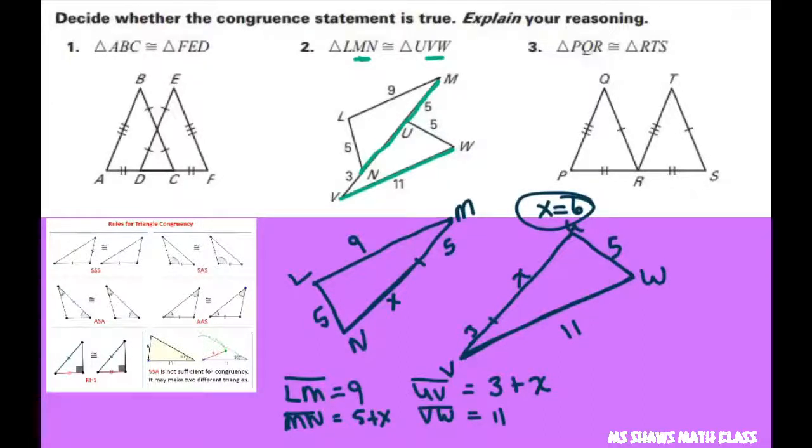So let's look at the final one. And the final one is LN. So LN is right here. It's 5. And we're also comparing it to UW. So where's UW? And that is 5. So UW equals 5. So this is congruent.